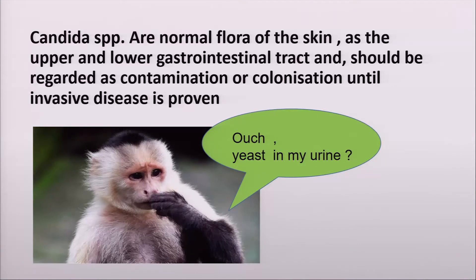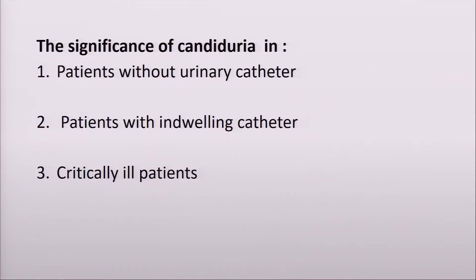You all know that candida is actually normal flora. We find it on our skin and in our GI tract, but we only consider treating when the candida becomes invasive and becomes an infection. So it's not uncommon that you find candida when you do a urine culture. In fact, during my consult, I always scold my junior doctors for collecting urine when the patient is asymptomatic — it causes a lot of trouble because you have to interpret it.